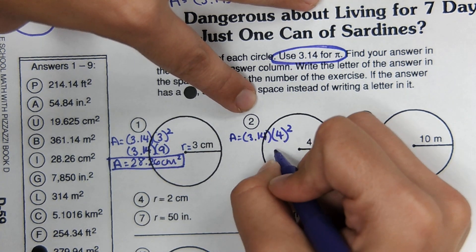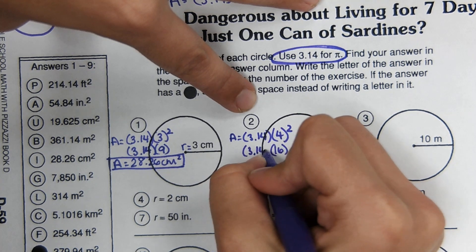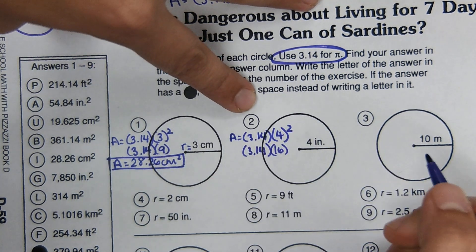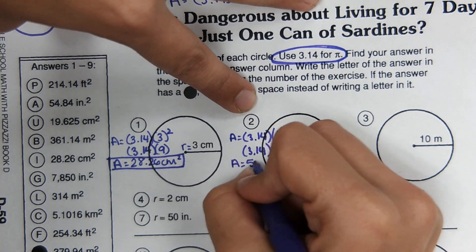Four squared is like four times four, which is 16. And then multiply these two numbers in the calculator. And it comes out to 50.24.